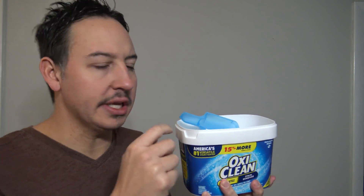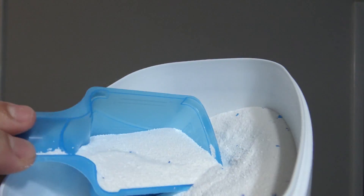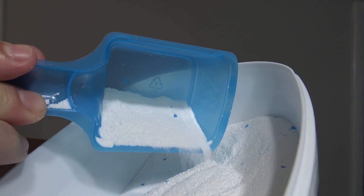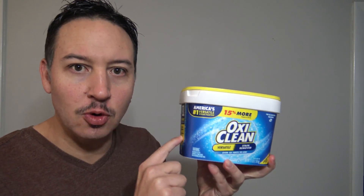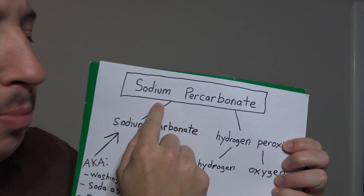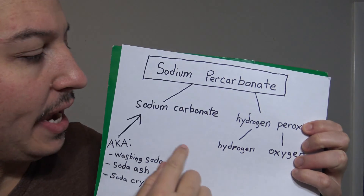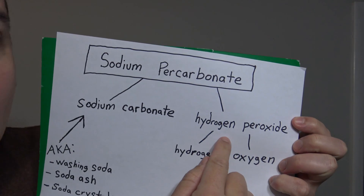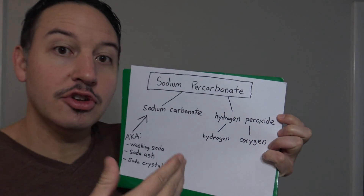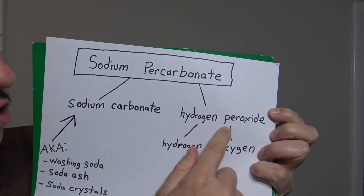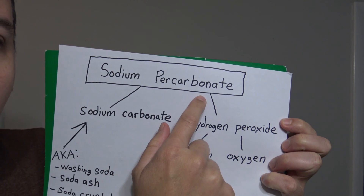Now let's talk about the primary active ingredient in oxygen bleach. When you open up a container of OxyClean you are going to notice a white powder with blue crystals. The primary active ingredient in OxyClean is sodium percarbonate. Sodium percarbonate is a chemical compound made up of sodium carbonate and hydrogen peroxide — the dried powdery kind.